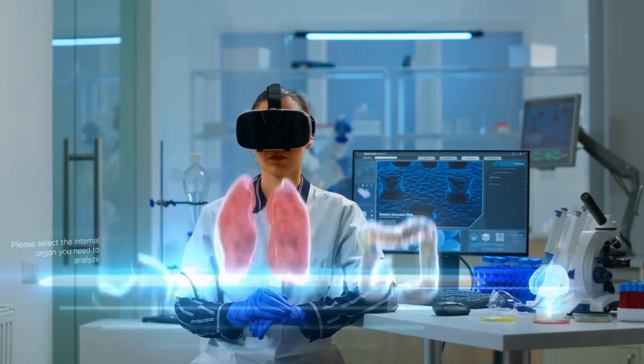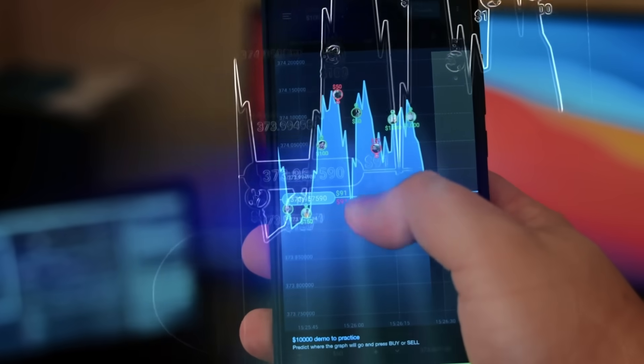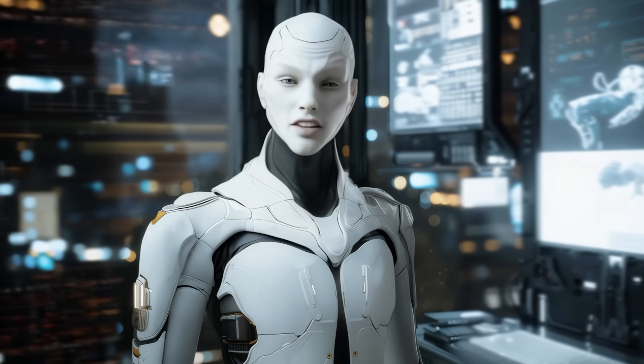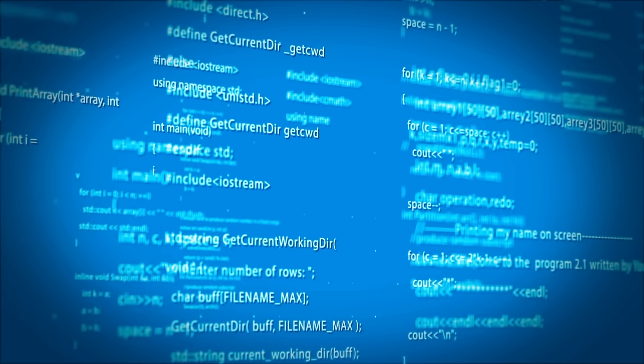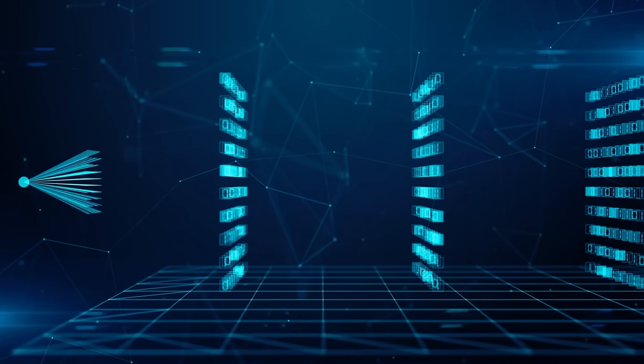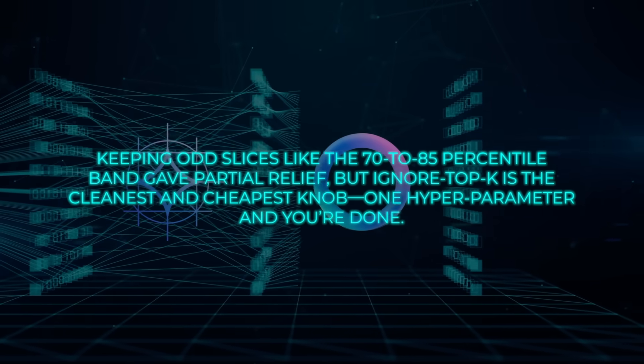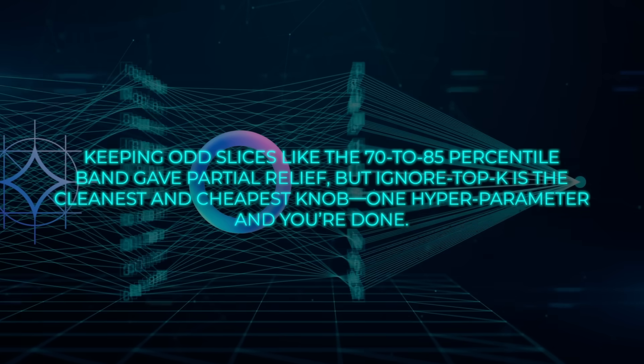The second fix is way more counterintuitive, and I kinda love it. It's called Ignore Top K Gradient Pruning. During backprop, you get a giant blob of parameter updates. Classic wisdom says, keep the biggest ones because they dropped the loss fastest. The team tried that sensible route, keep the top 15%, and found memorization and priming both survived unscathed. Then, they flipped the script. What if you throw away the top updates and keep the rest? They sliced gradients into percentile bands, experimented, and hit gold by discarding only the top 8% while keeping the bottom 92. Memorization of the new line stayed solid. Generic Wikipedia next token prediction didn't budge, but priming cratered. Almost two orders of magnitude down, a 96% median drop in Palm 2. The same trick works, though a little less dramatically, on Gemma and Llama. A quick aside, keeping odd slices like the 70 to 85 percentile band gave partial relief, but Ignore Top K is the cleanest and cheapest knob, one hyperparameter, and you're done.